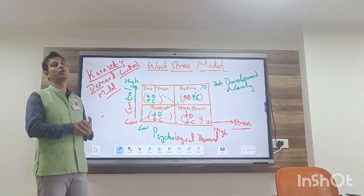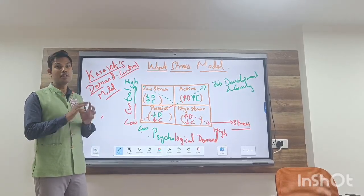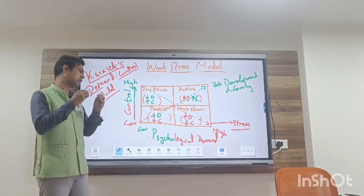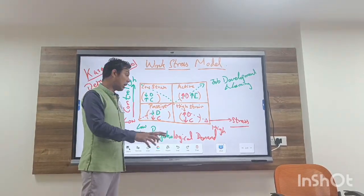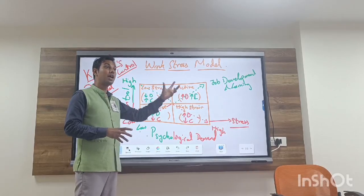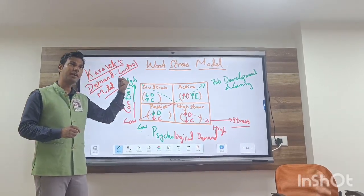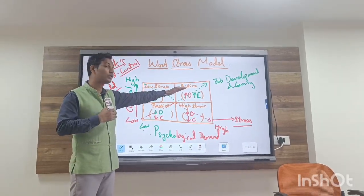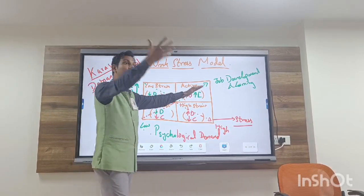But you have control over the situation. Since you have control over the situation, how much demand? Psychological demand. You have control. That is known as active job.